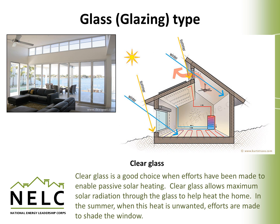Clear glass is a good choice when an effort has been made to enable passive solar heating. In the wintertime, we want the heat from the sun to penetrate into our homes and help heat the home, so we want clear glass that allows that heat to pass through. This would also mean that in the summertime, overhangs would be designed to cut off that sunlight when the heat is not wanted, so the window would be in the shade.